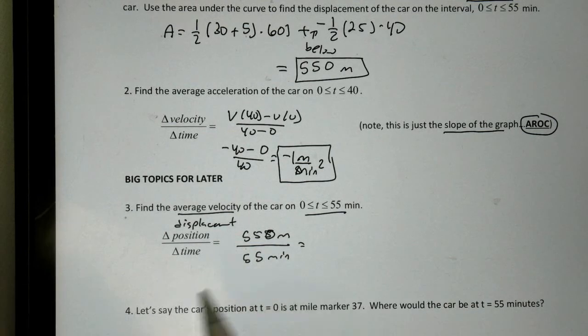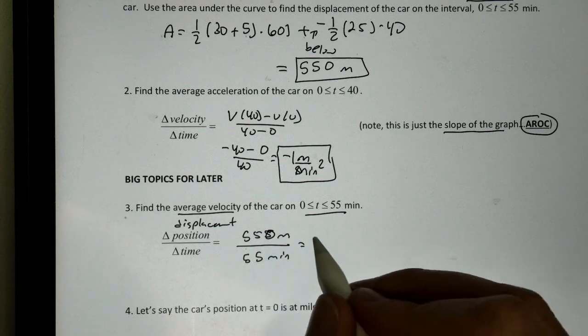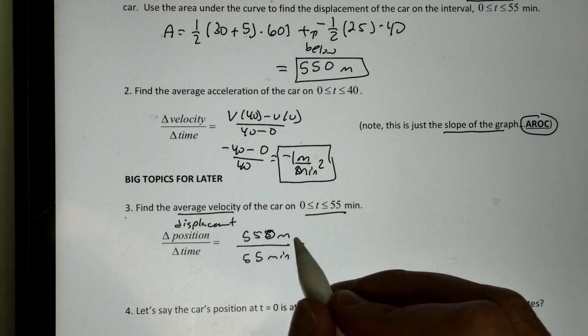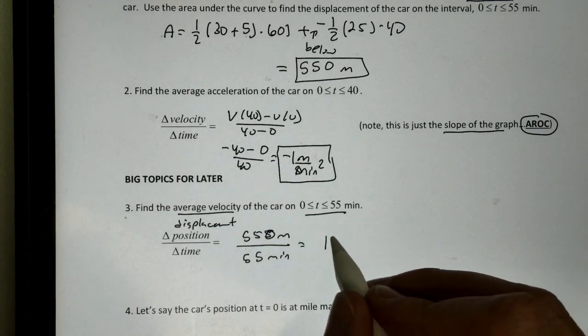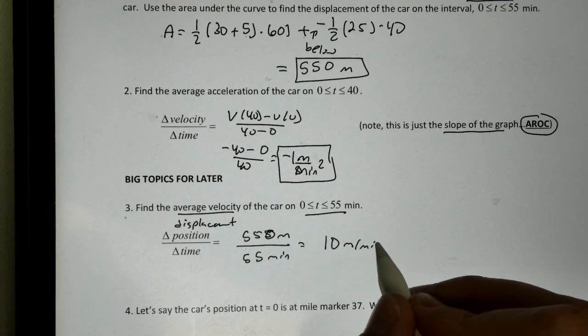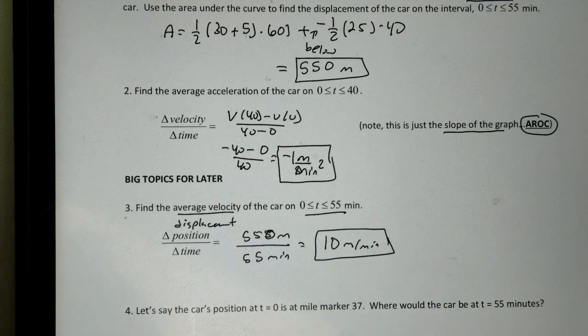So my average velocity, distance over time, is just going to be 550 divided by 55, 10 meters per minute. And there is our average velocity.